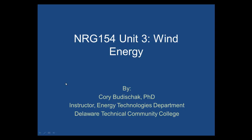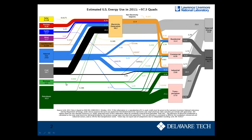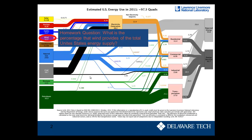Where we start is with the energy makeup of the United States. What I want you to do for homework is, if we look at wind's contribution to the energy mix, it doesn't look like a very big contribution. This is for 2011. So what I want you to calculate for homework is what percentage wind provides of the total United States energy supply. That will be one of your homework questions, so make sure you calculate that.